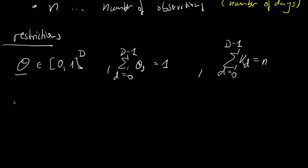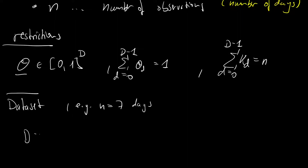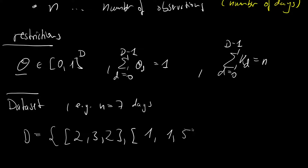A dataset could look as follows: if we observe the weather for 7 days, we could have a week with 2 cloudy days, 3 rainy days, and 2 sunny days; then 1 cloudy day, 1 rainy day, and 5 sunny days; and another week with 2 cloudy days, 1 rainy day, and 4 sunny days, and so on.